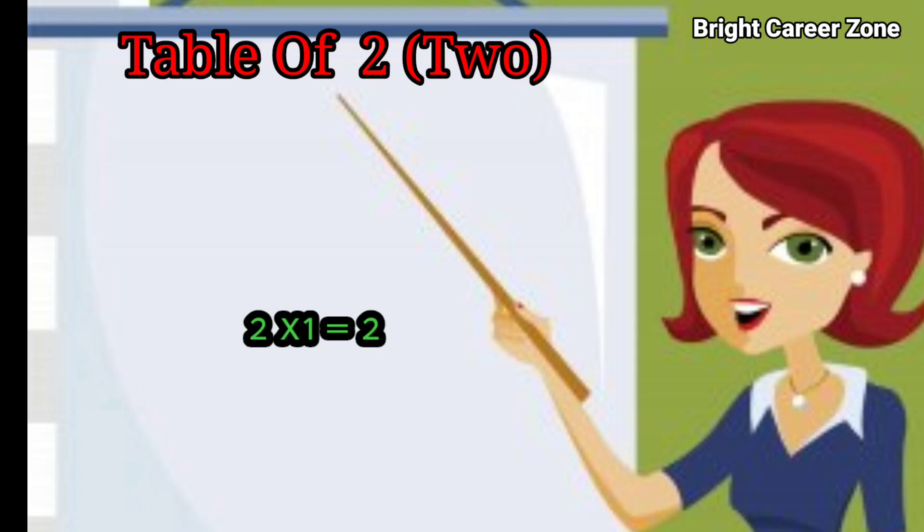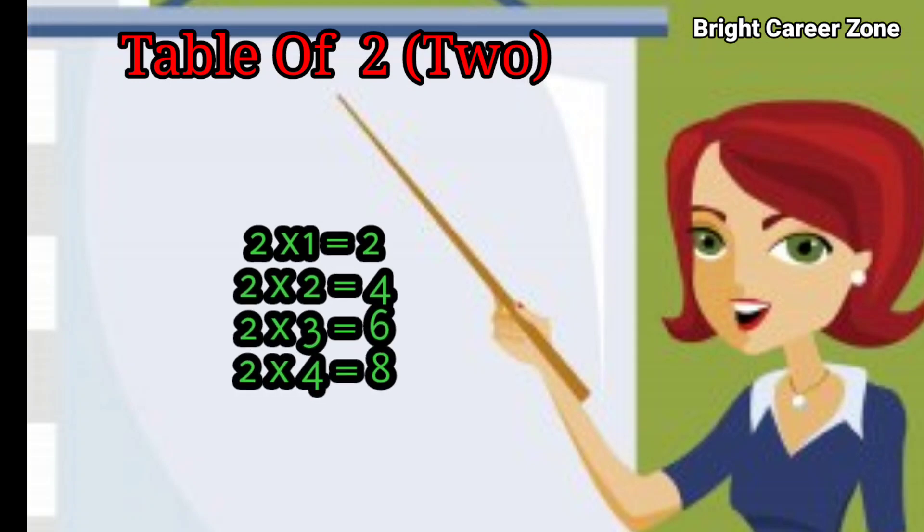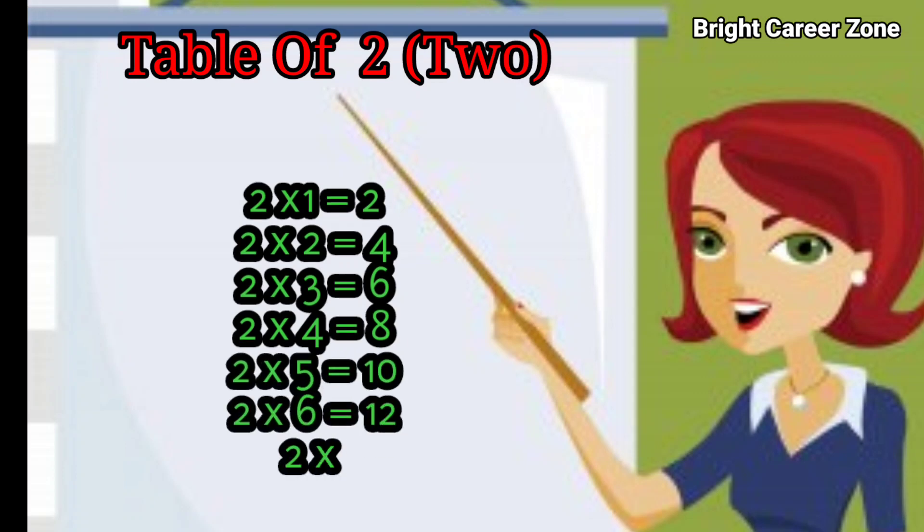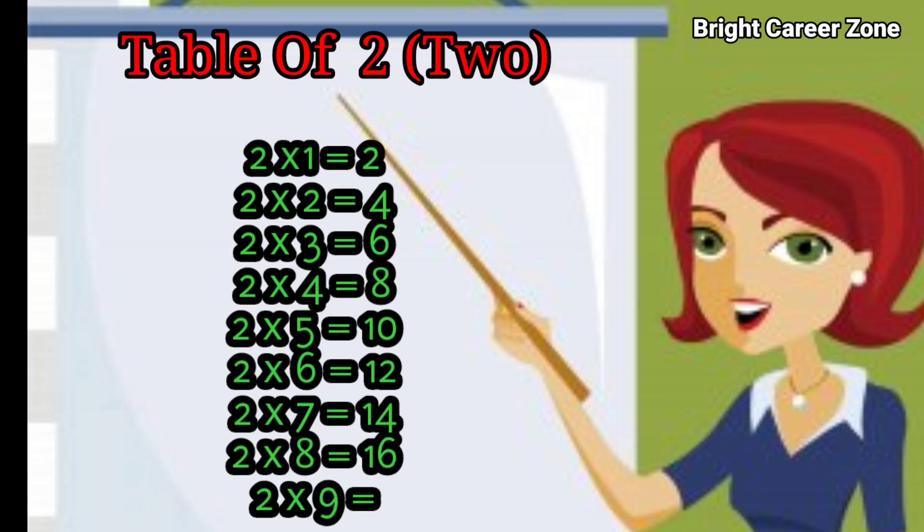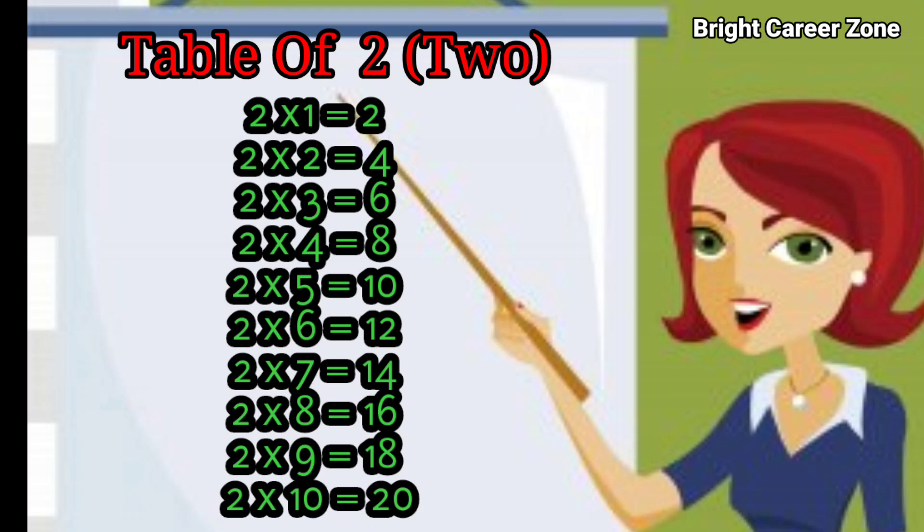2 1's are 2, 2 2's are 4, 2 3's are 6, 2 4's are 8, 2 5's are 10, 2 6's are 12, 2 7's are 14, 2 8's are 16, 2 9's are 18, 2 10's are 20. So let's repeat it once again.